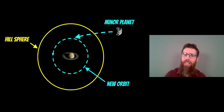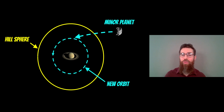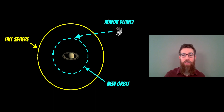The same is actually true for moons. In our solar system there are a lot of captured moons around the outer planets. If a minor planet or asteroid or small object comes close enough to a planet and is moving slowly enough not to escape out the other side, it can be captured onto a new orbit as well.